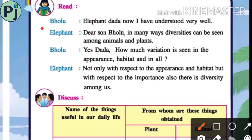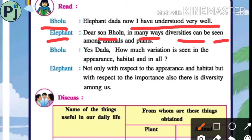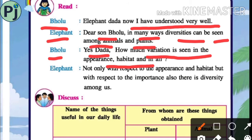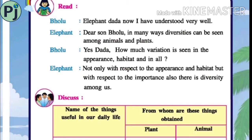Come to the next page. Bholu said, 'Elephant dada, now I have understood very well.' In many ways, differences can be seen among animals and plants. The elephant said that not only with respect to appearance and habitat, but also with respect to importance, there is diversity among us.